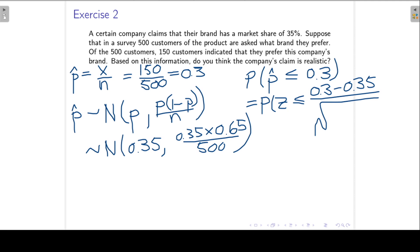We divide by the standard error of the sample proportion. The standard error is just the square root of the variance. And this is the probability that Z is less than or equal to negative 2.34. You can go and do the rest of the calculations, and I got an answer of 0.0096.